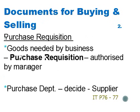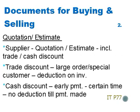When goods are needed by the business, a purchase requisition needs to be prepared and then authorized by the manager of the department which needs the goods. Once authorized and signed, it is passed to the purchasing department, who will decide on the appropriate supplier. The supplier will then send a quotation or estimate for the goods requested, which may include a trade or cash discount. A trade discount is given for large orders or to special customers and will be shown as a deduction on the invoice. A cash discount is usually given for early payment within a certain period of time and cannot be shown as a deduction until payment has been made.